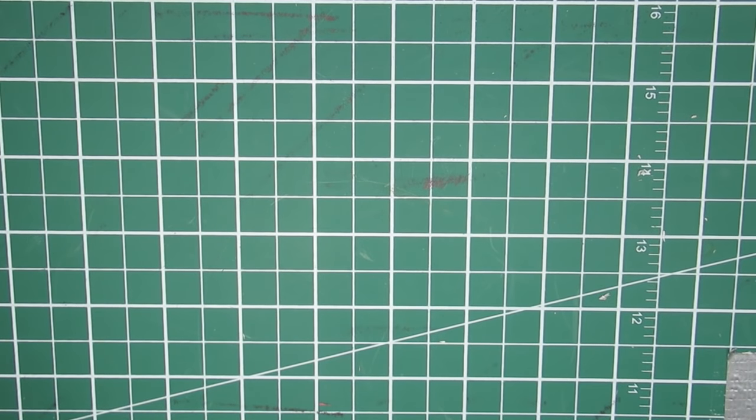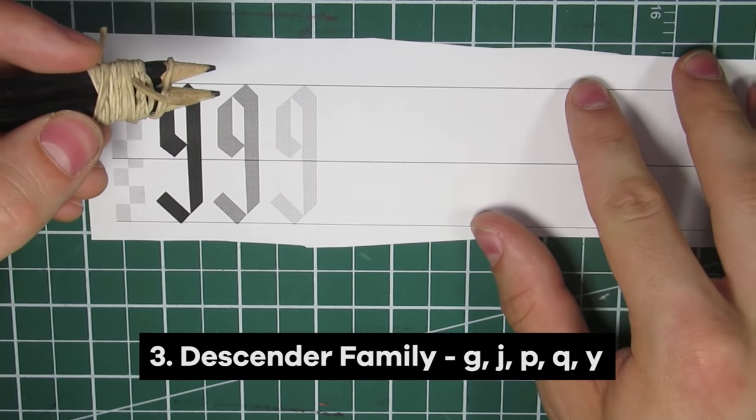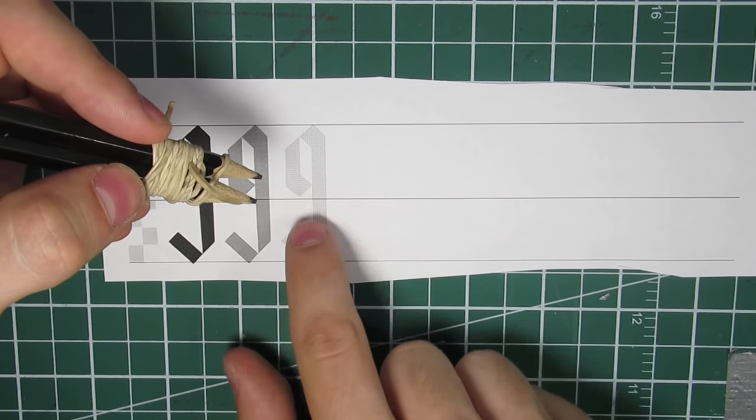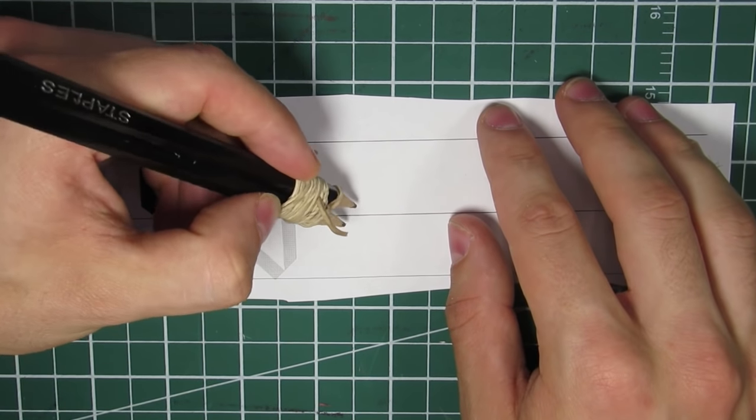Next family is the descenders, which is G, J, anything that goes below that line. Ascender, descender, see what I'm getting at? So now,